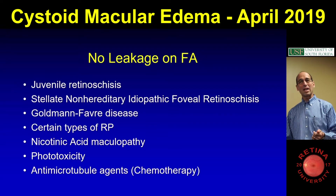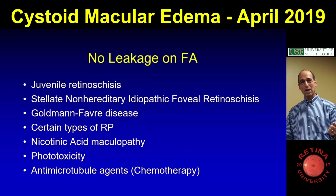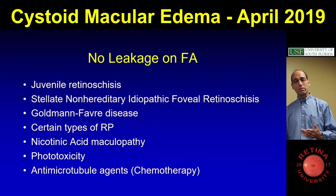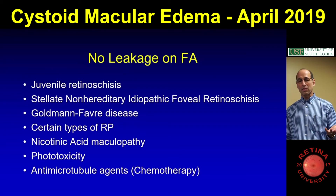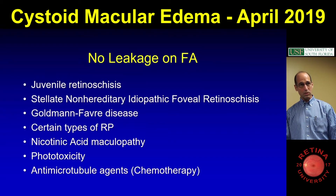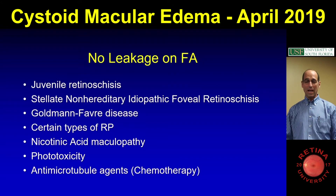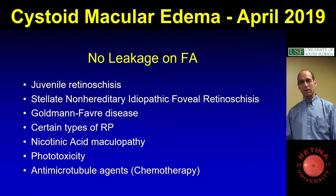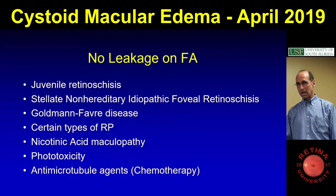We showed the case of a guy who was 60 or 70 and had retinoschisis, but it was not hereditary. Goldman-Favre, which I group kind of with retinoschisis, and then certain types of RP — but I don't think you have to remember that because most RPs do leak. And then nicotinic acid, which you do have to remember. Phototoxicity, I don't think you need. And then antimicrotubule agents, which are some chemotherapies, have no leakage on FA.